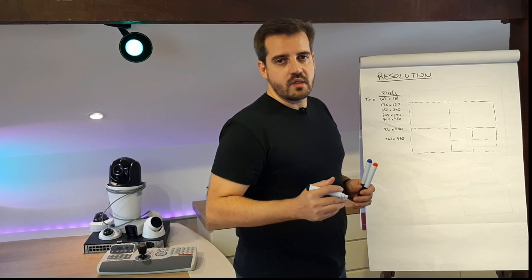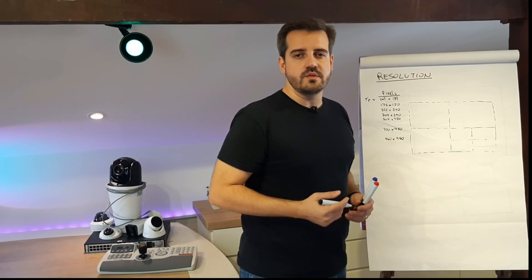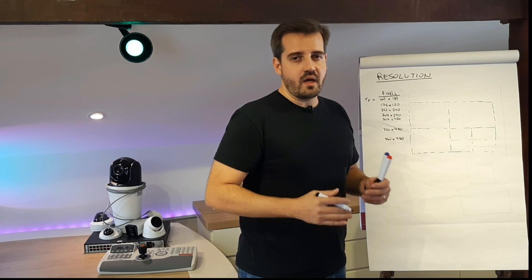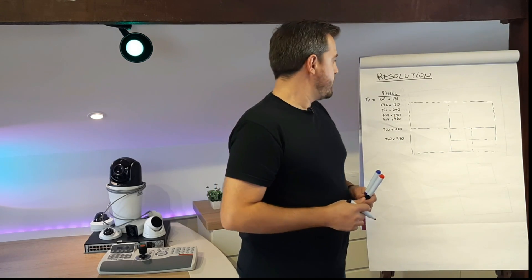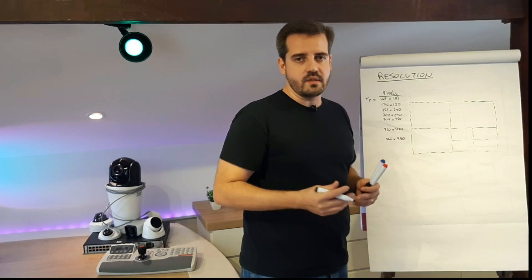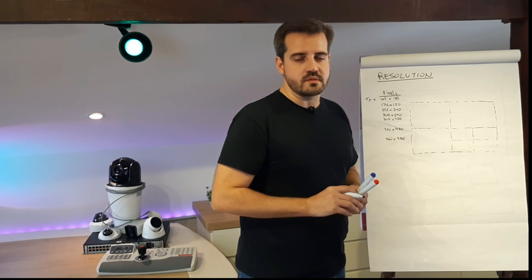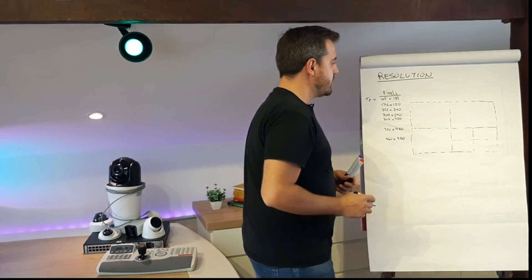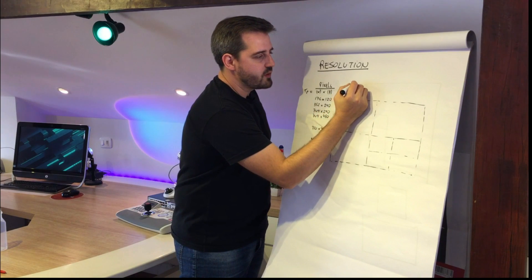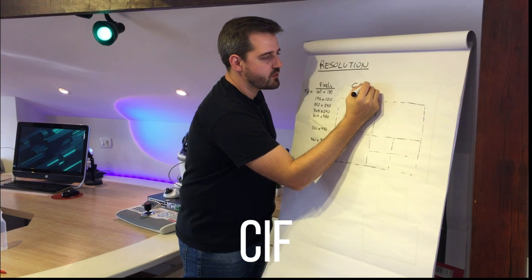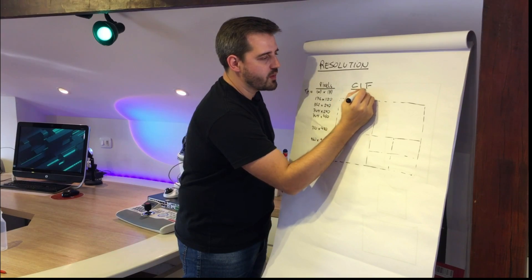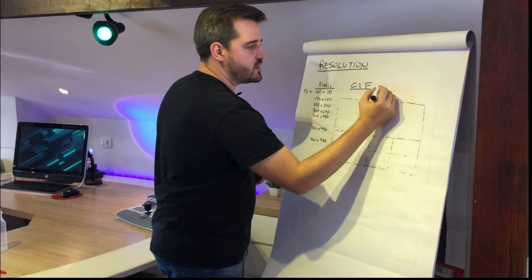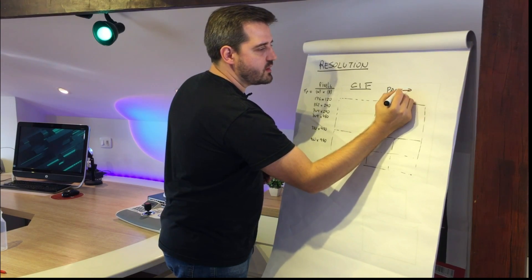Okay, so initially we'll cover the resolutions that we use in the analog systems, analog cameras or even high-quality analog as well. Basically the initial or early stages, it was the ones that was most commonly used. So we will start with SIF, Common Intermediate Format. This format was created to be easily converted between PAL and NTSC.